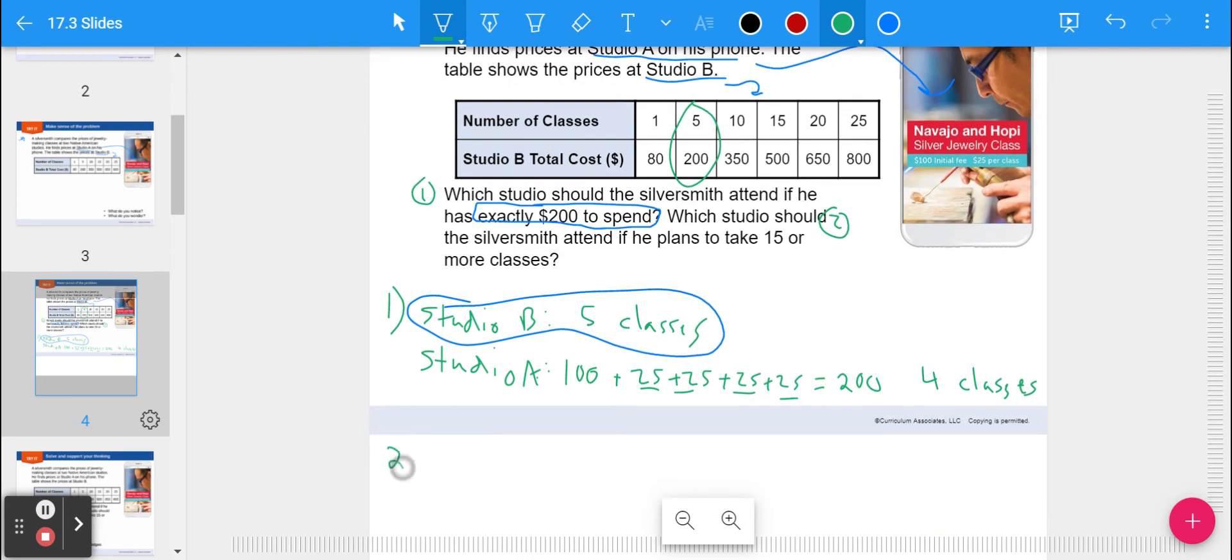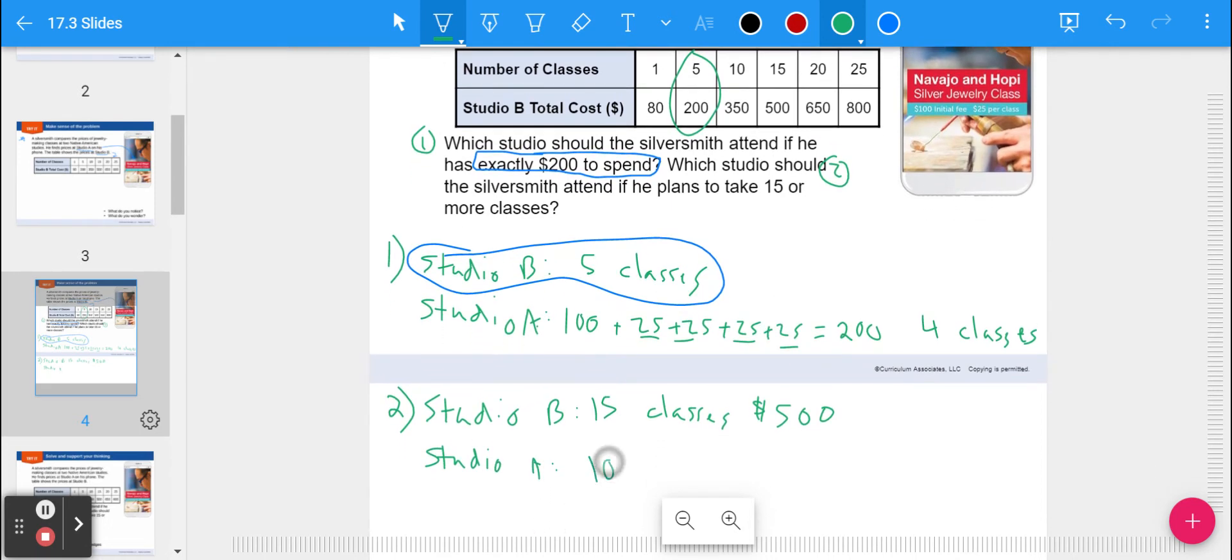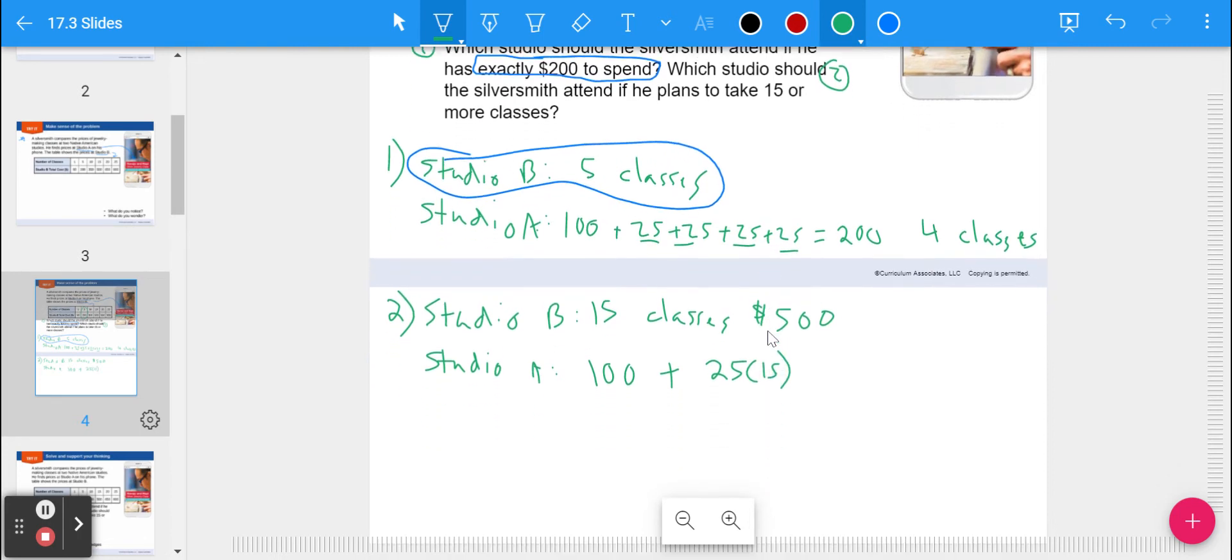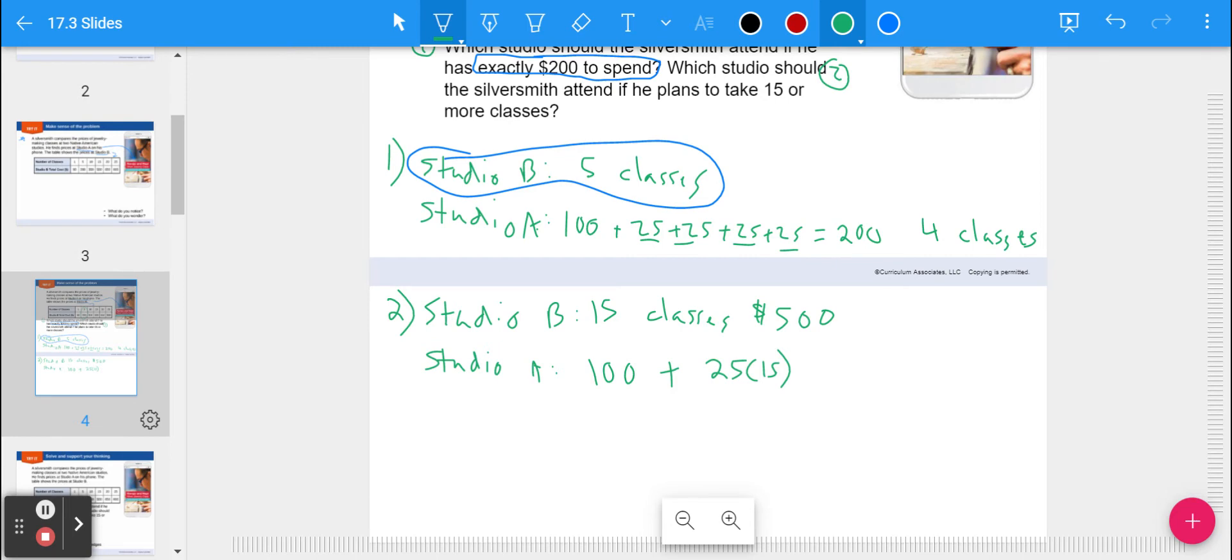Now, question two asks, if they wanted to do 15 classes, which one should we pick? Well, 15 classes for Studio B is given. 15 classes, it says up there $500. Studio A, we have to figure it out. If I do $100, that's my starting fee, plus it's $25 per class, so 25 times 15. Instead of adding 25 fifteen times, I can just do 25 times 15. 25 times 15 gets me $375. So that's $100 plus $375, which is $475 for 15 classes. So in that case, I would take Studio A because it's less money.